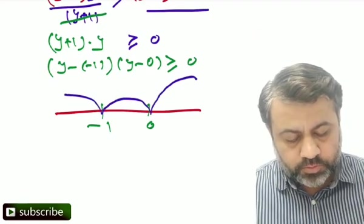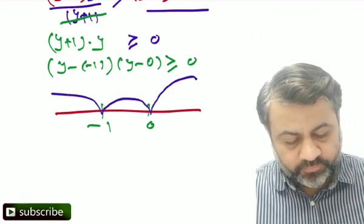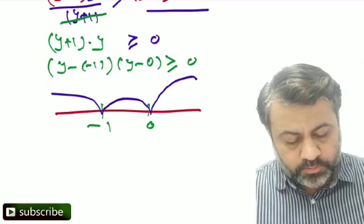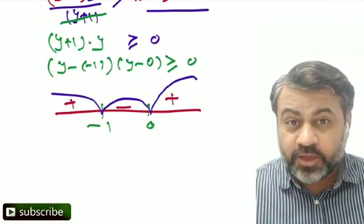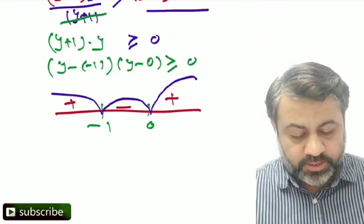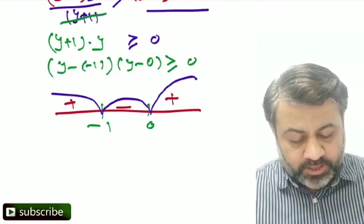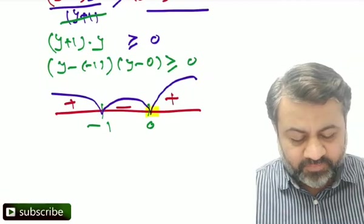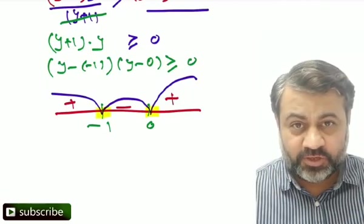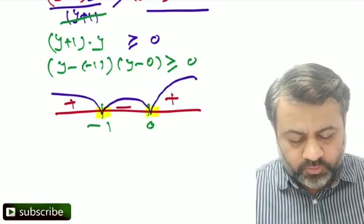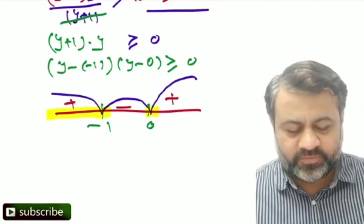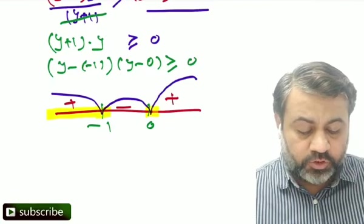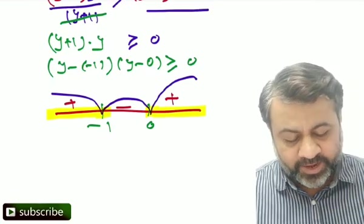Draw the loop from right hand side. The first value will be plus, minus, plus. Since we need greater than or equal to 0, y can be equal to 0 at the same time y cannot be equal to minus 1. These two things we need to take care: value smaller than minus 1 but not equal to minus 1 up to minus infinity, value can be equal to 0 up to infinity.